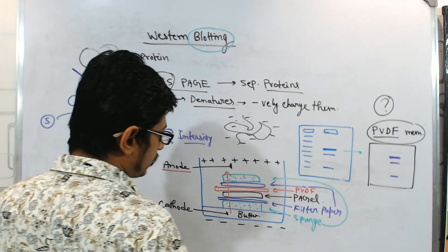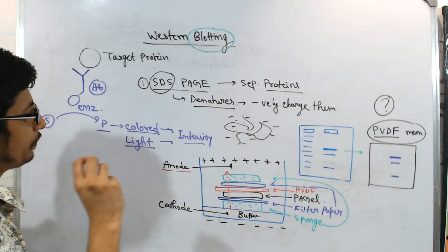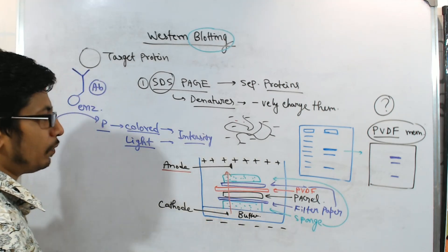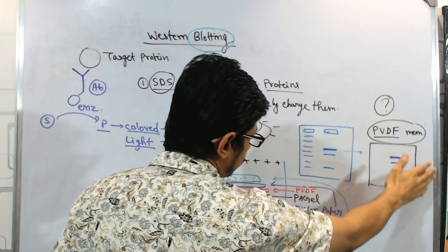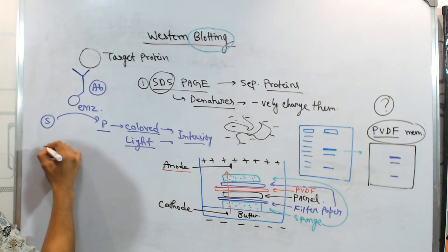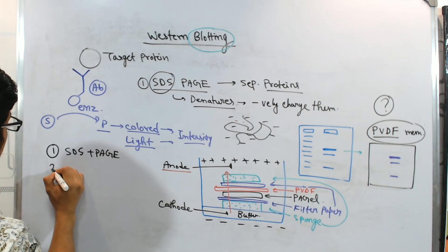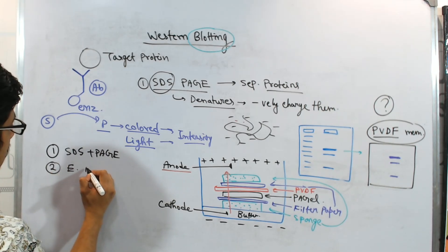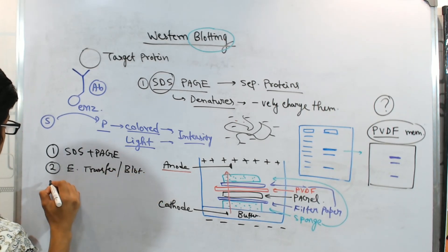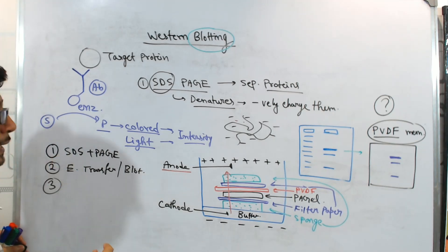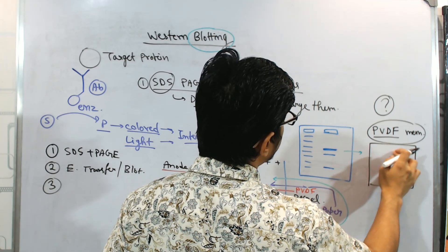After the transfer is done, we simply want to visualize the target protein of our choice. To do so, we use the probe — in this case the antibody we produced. The important steps so far are: step one, SDS treatment plus polyacrylamide gel electrophoresis; step two, electrophoretic transfer or blotting. After blotting is done, the very next step is blocking — we don't want any unwanted noise from the background.